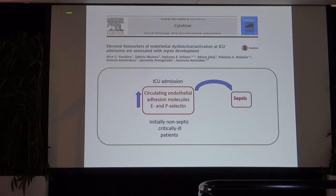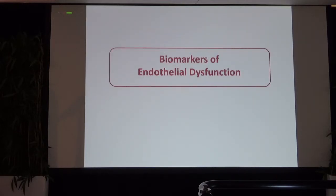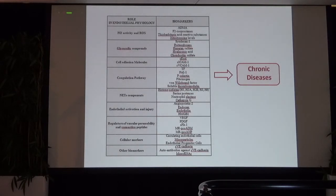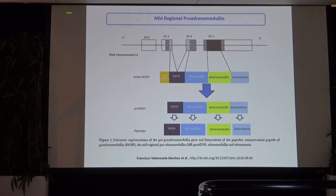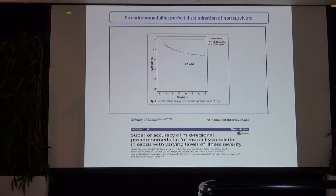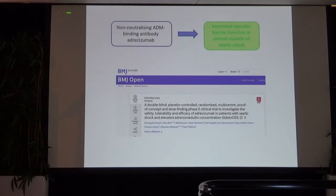In addition to biophysical methods, a number of biomarkers could help us assess endothelial dysfunction — many coming from experience in cardiovascular and renal diseases. One particularly interesting biomarker is mid-regional pro-adrenomedullin (MR-proADM), the stable part of adrenomedullin. It reflects aggression to the endothelium and is supposed to possess a predictive role in sepsis. We have demonstrated that pro-adrenomedullin can perfectly distinguish survivors from non-survivors in sepsis. There is also an ongoing trial proposing an antibody blocking adrenomedullin to preserve it inside blood vessels and maintain its protective activity.